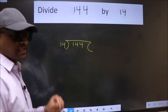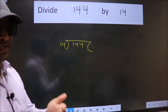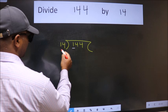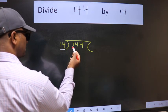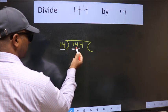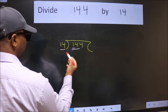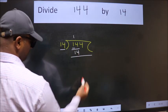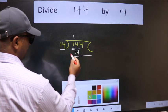Next, here we have one, here 14. One is smaller than 14, so we should take two numbers: 14. When do we get 14 in the 14 table? 14 once 14. Now we should subtract.